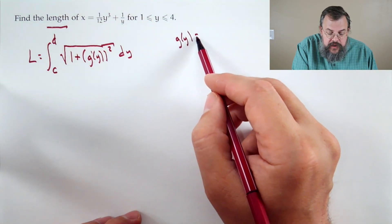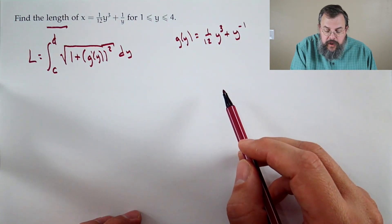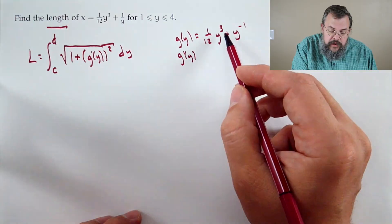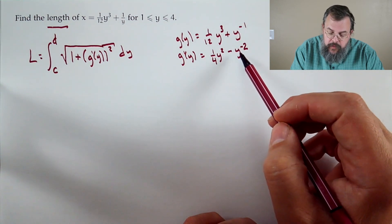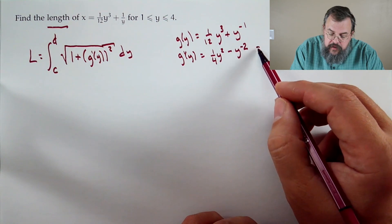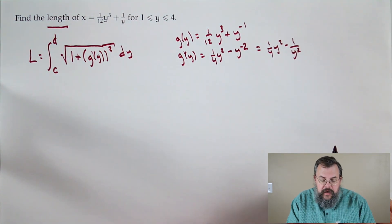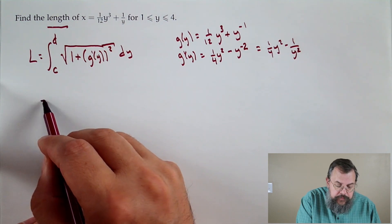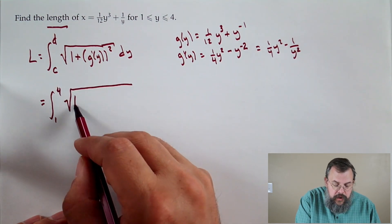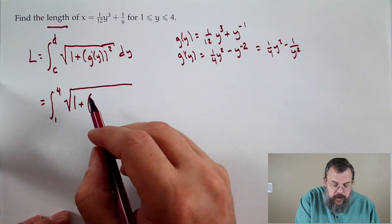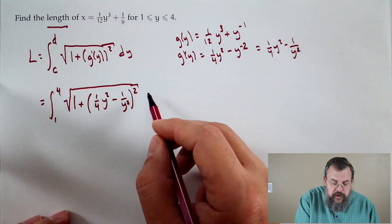Our g(y) is one-twelfth y cubed plus one over y, which has y to the minus one. So g'(y): the three comes down, three-twelfths known as one-fourth, giving y squared; minus one comes down giving minus y to the minus two. Also written as one-fourth y squared minus one over y squared. Our bounds are one to four, so we have the integral from one to four of the square root of one plus (one-fourth y squared minus one over y squared) all squared, dy.